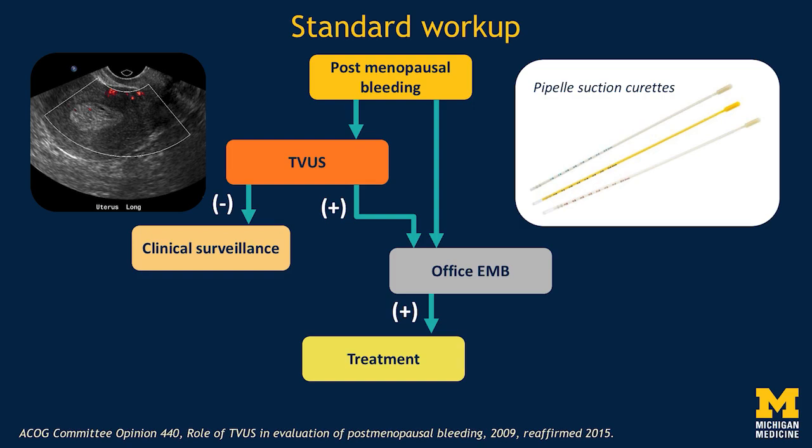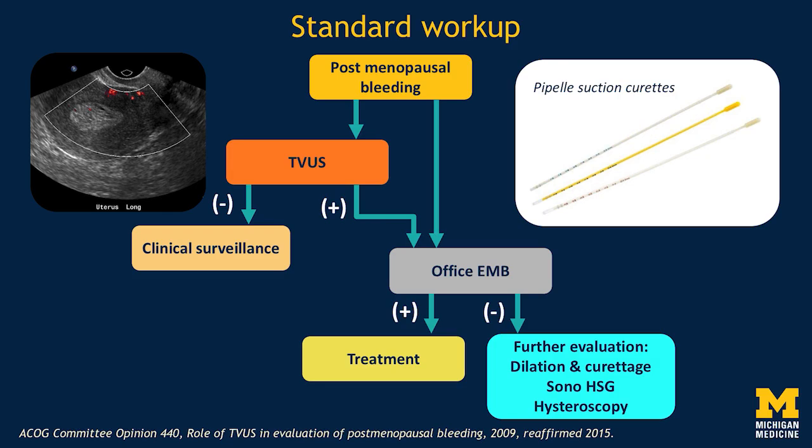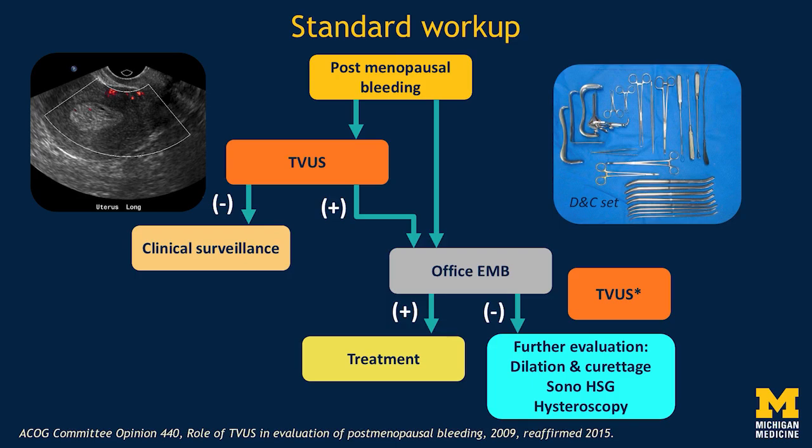If the biopsy is positive, the patient goes on to treatment. If it's negative, the patient might go on to further evaluation with dilation and curettage, a sonohistogram, or even hysteroscopy. Sometimes if an ultrasound wasn't previously performed, it'll be done at this point. Patients would prefer to avoid dilation and curettage when they don't need it, because it's a much more invasive procedure.